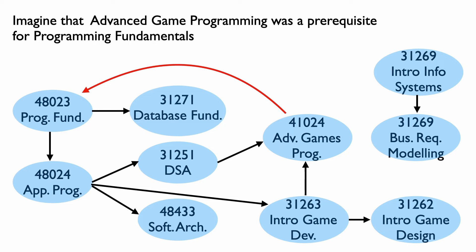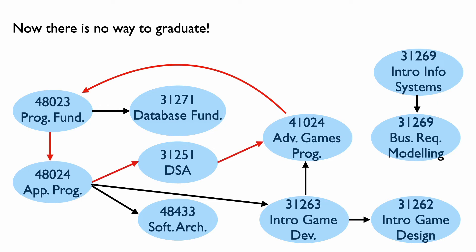So let's go back to our prerequisite example. And now imagine that UTS decided that advanced game programming should also be a prerequisite for programming fundamentals. So we add an edge, this red edge here in our prerequisite graph, from advanced game programming to programming fundamentals. You see that this creates a directed cycle in the prerequisite graph. And I've shown the edges of that cycle in red.